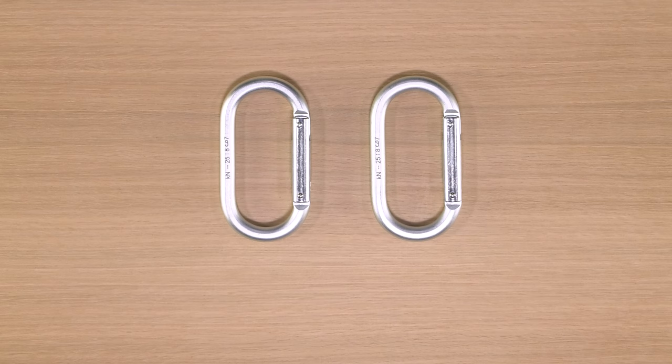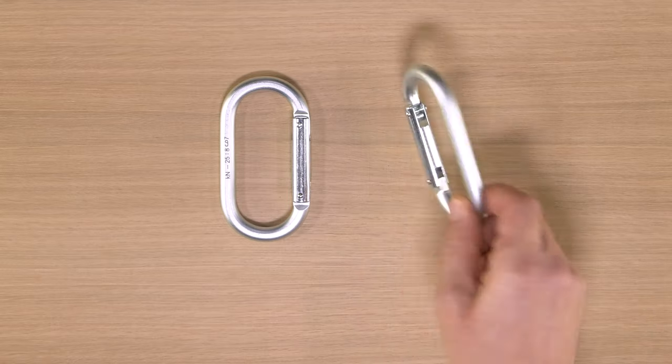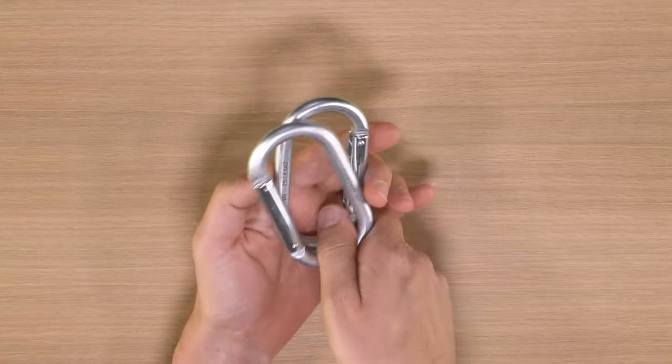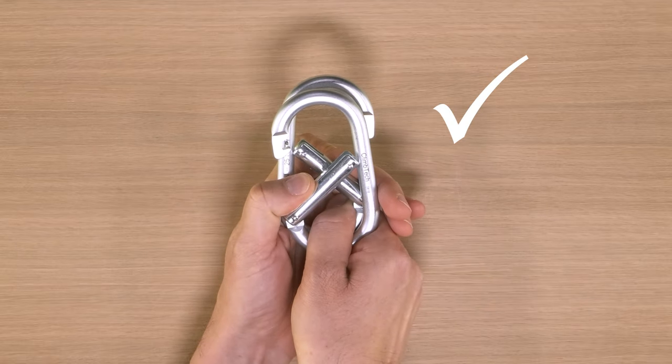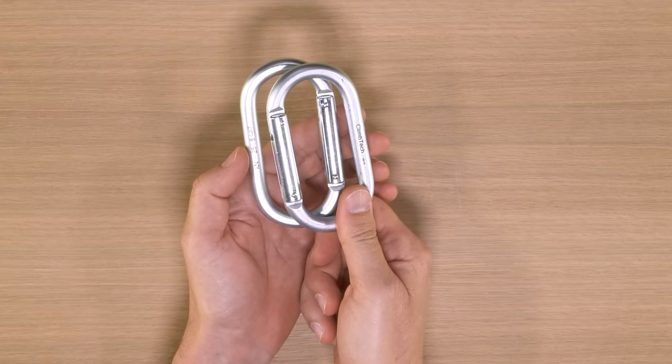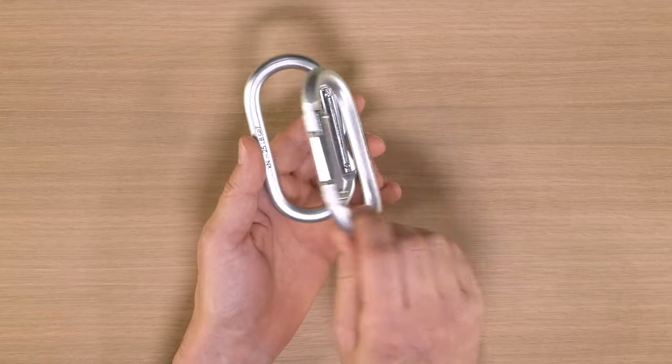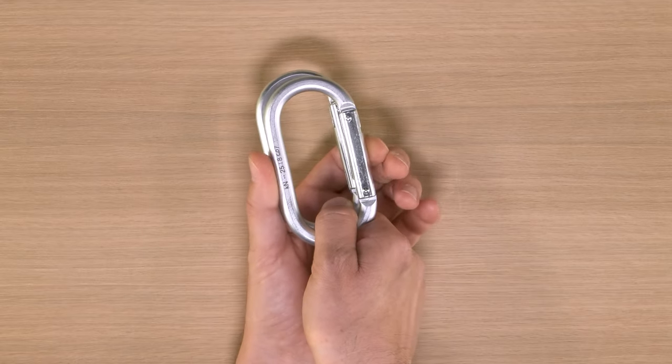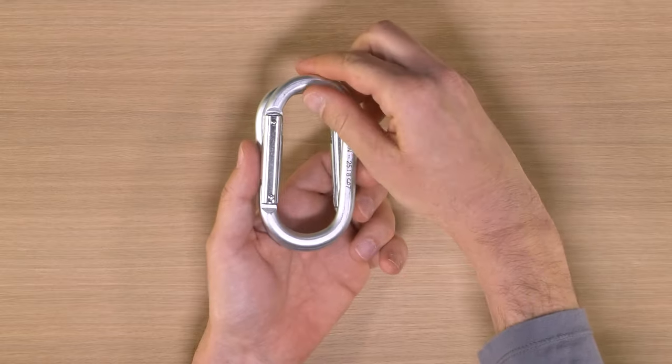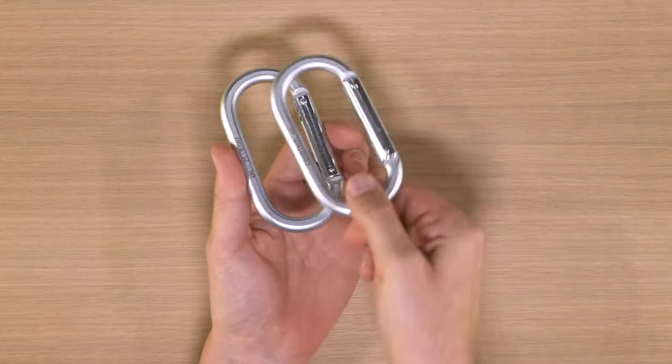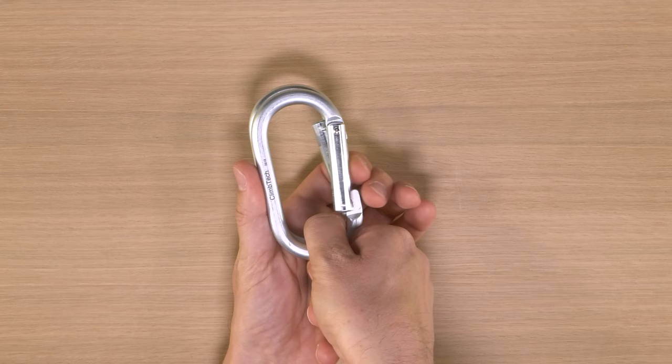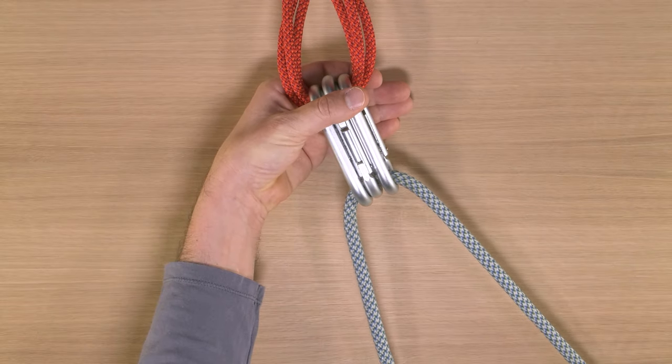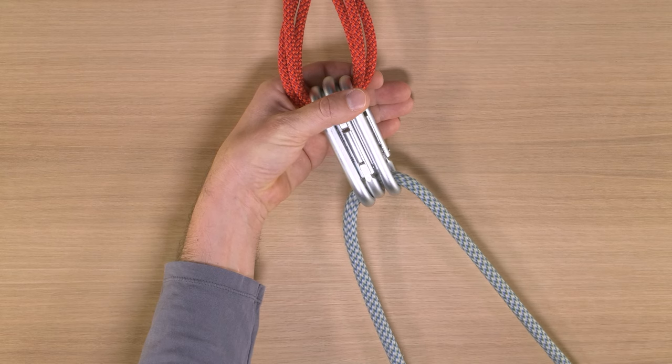Clipping carabiners opposite and opposed means clipping the carabiners in the opposite direction, and also making sure the gates are opposed. This would usually apply to building a top rope anchor, where you're using two non-lockers for your master point. If the gates faced the same direction, they could press against something and both open, reducing the strength of both carabiners. So the gates need to be opposed. You also clip them in opposite directions so that if one rotates, you don't end up with that same problem. Adding a third carabiner gives you extra width there and helps the rope run smoothly, and of course makes your anchor even more redundant.